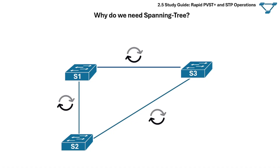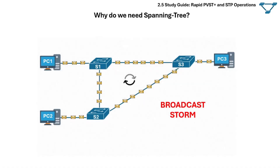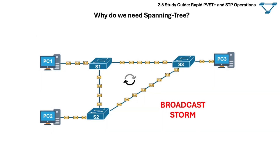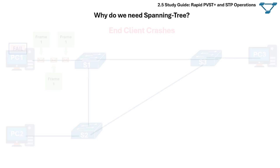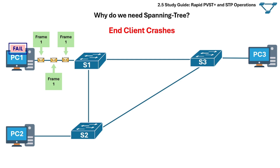Why do we need Spanning Tree? In a switch network, loops can cause the following problems. A looping frame can cause a broadcast storm, where switches flood broadcast frames on all ports except the incoming interface. The storm also causes MAC table instability, where multiple copies of the same frame loop around and the switch receives it on multiple interfaces. End devices receive multiple copies of the same frame, causing high CPU usage, and critical applications may starve of resources and fail.